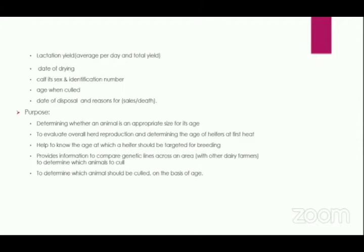We also need to know the yield per total lactation period and when we dried the cow. The calf born by this cow — what was its sex and identification number. If we are to cull this animal, the age at which we are culling it; and if we are to dispose — maybe it had an accident — we need to know the date of disposal and why it is leaving our herd.